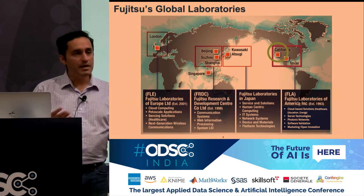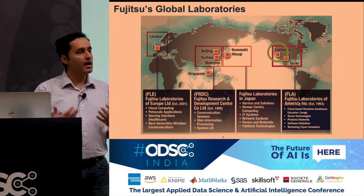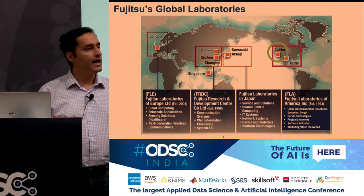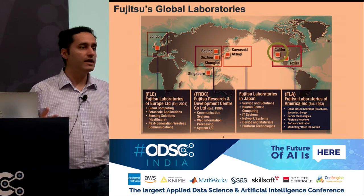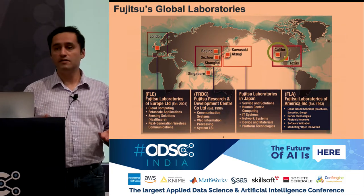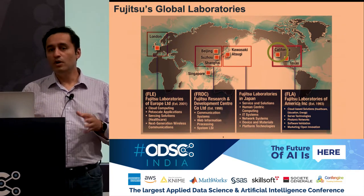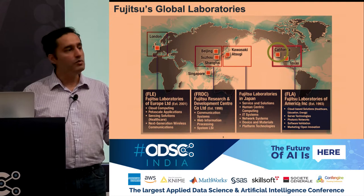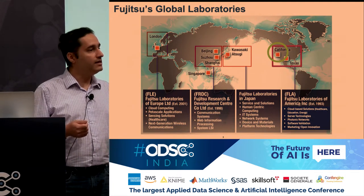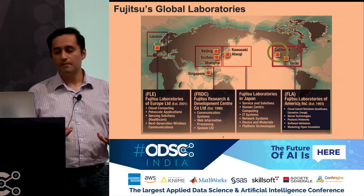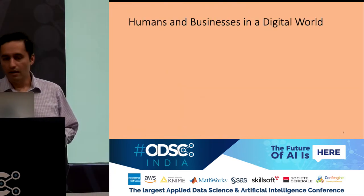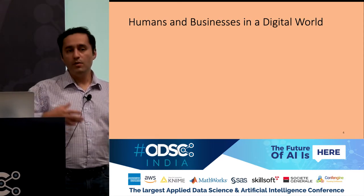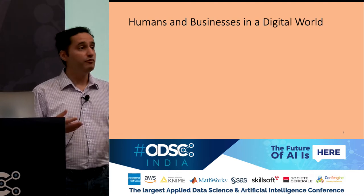We both work at Fujitsu Labs. Fujitsu is Japan's number one IT services provider and the fifth largest IT services provider in the world. We work in the California labs based in Silicon Valley, and our lab is primarily a human-in-the-loop systems lab, so we work on problems at the intersection of computing science and cognitive science. Fujitsu also has many enterprise customers, and working with them across many verticals gives us a rich set of research problems.